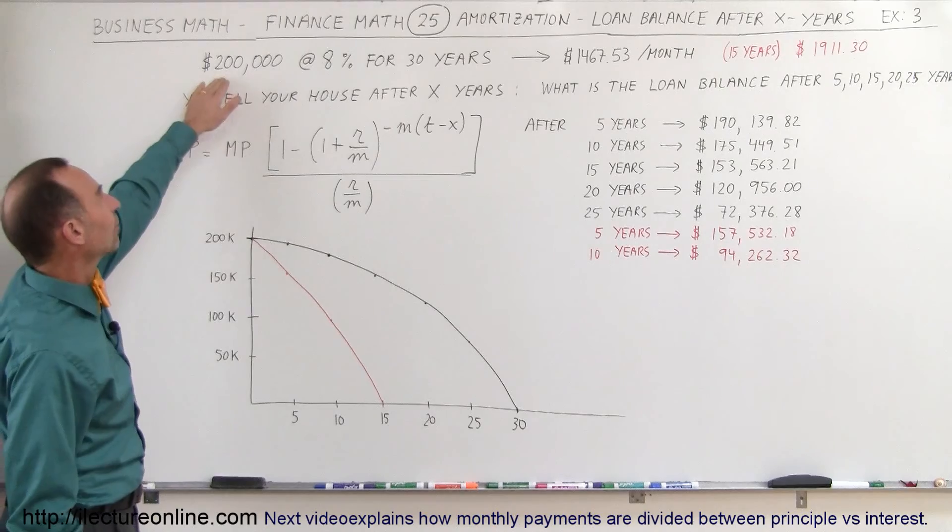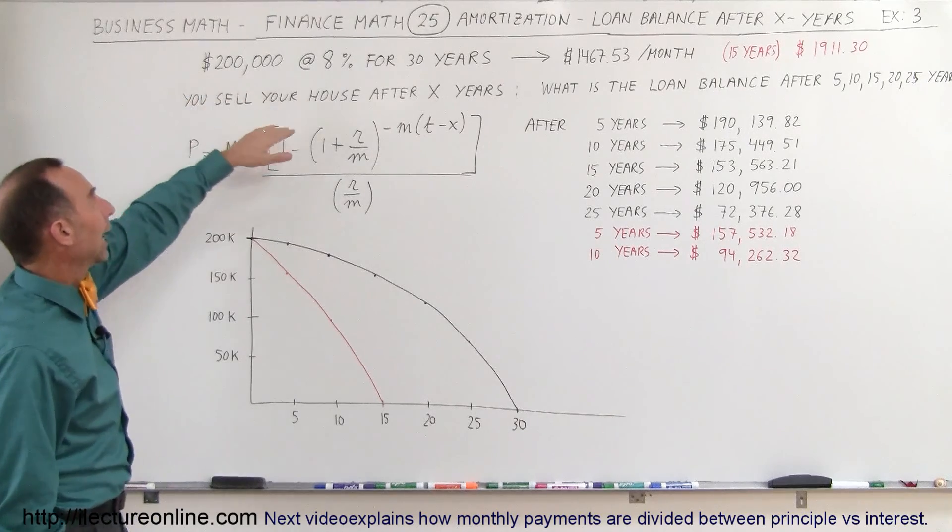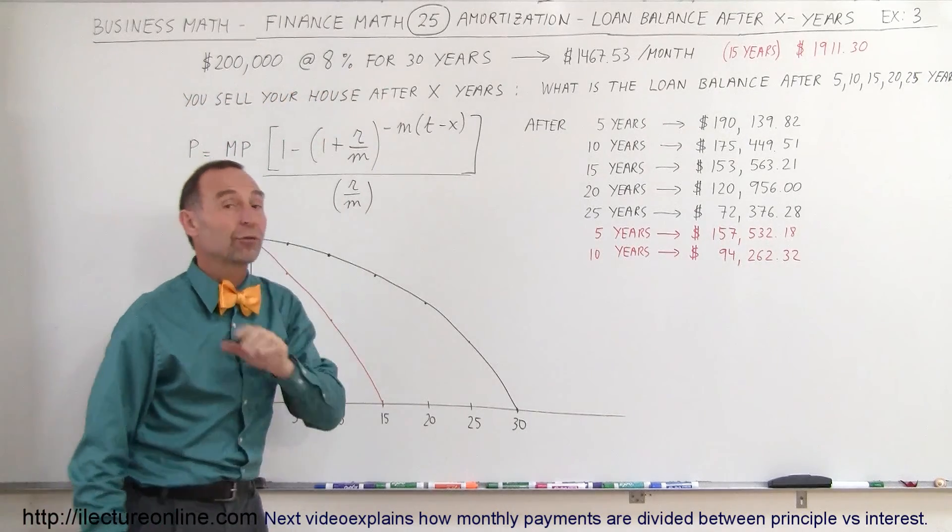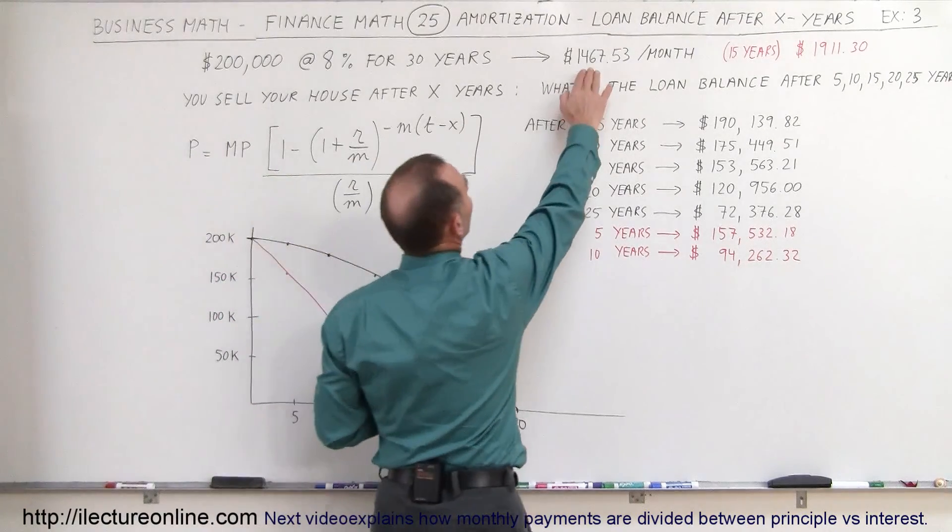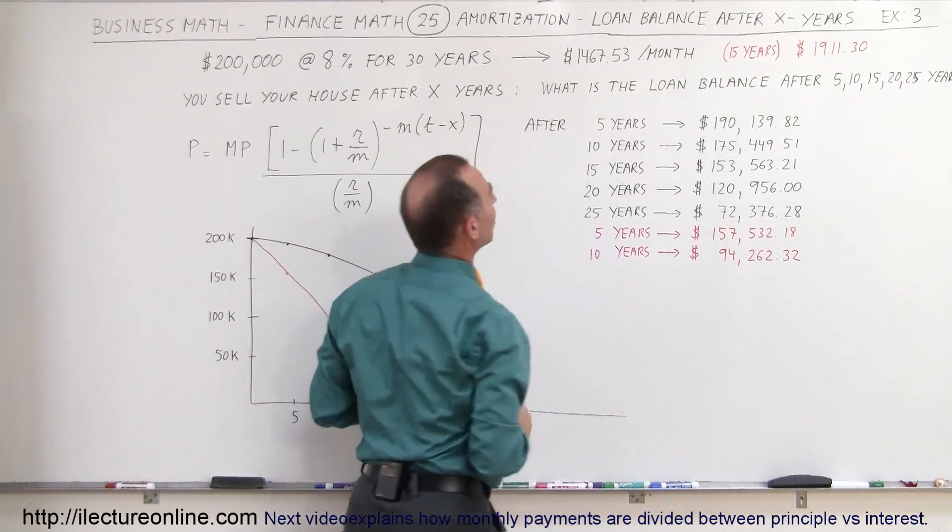So let's say we have a $200,000 loan at 8% interest and we're paying it off over 30 years. The monthly payment is $1,467.53 per month.